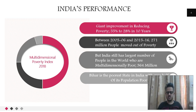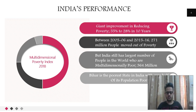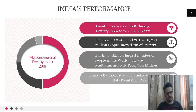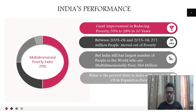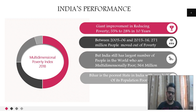Certainly the efforts of the Indian government are commendable — whichever government it was, it did a tremendous job in moving 270 million people out of poverty. However, as mentioned, India still has the distinction of being home to the largest number of poor, with 364 million people who are multi-dimensionally poor.